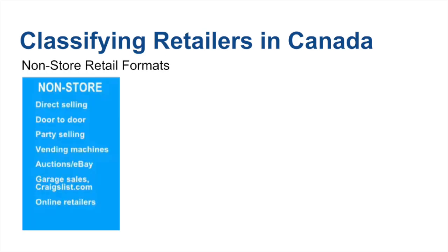We can also expand on non-store retailing formats. Direct selling is when the buyer and seller directly communicate and deal with each other for a specific product, usually related to higher-value products such as machinery sold at a corporate level. Door-to-door selling is reduced in popularity but is effectively when someone goes to a door and sells a product. Party selling is similar to Avon, where distributors sell to groups. Vending machines and electronic retailing we've talked about. Auctions can be real-live auctions or online auctions such as eBay. Garage sales, Craigslist, classifieds are examples, and obviously online retailers.